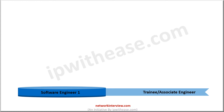The beginning level or the entry level position is Software Engineer 1. New graduates with no work experience are mostly hired under this category. It equals the trainee or associate engineer position in other organizations. The average annual salary of the entry-level software engineer at Adobe is $150,000 to $160,000, divided into components like base salary, a stock grant, and a cash bonus.